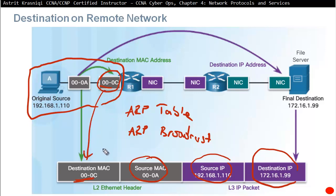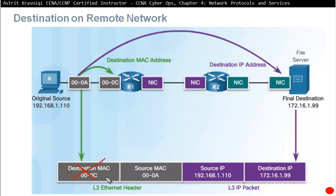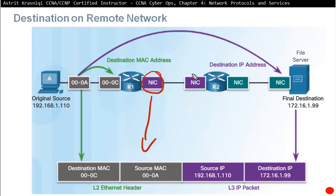The broadcast asks for the gateway's MAC address. Once found, it's placed as the destination MAC address. The router receives the packet, looks at the destination MAC address, sees it matches its own, and accepts it.